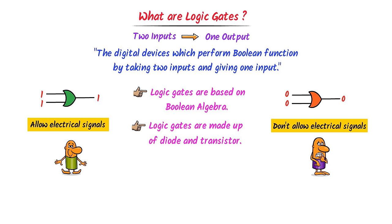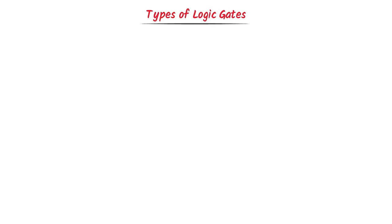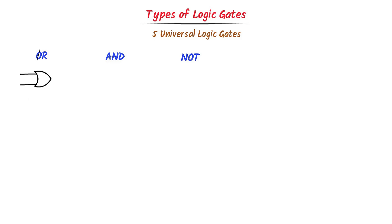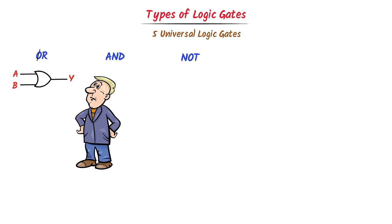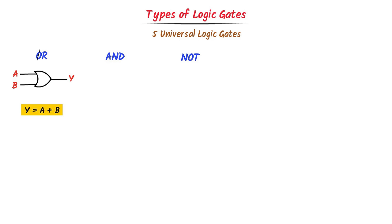What are the types of basic logic gates? There are five logic gates. First, the OR gate: I draw its symbol with a half-cut O and a curved side. We give two inputs A and B, and get output Y. The OR gate adds these two inputs, so Y equals A plus B.